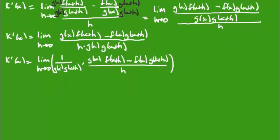In fact, I should scroll down right over there. Okay, so if I were to continue on, I am going to separate this relationship into the limit of this. So h approaches zero of one over g of x, g of x plus h.